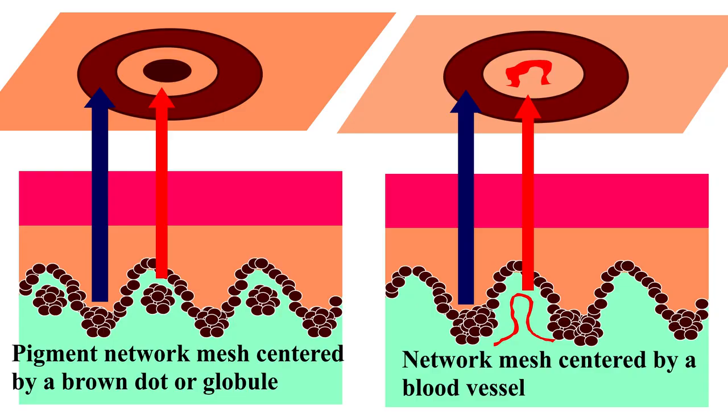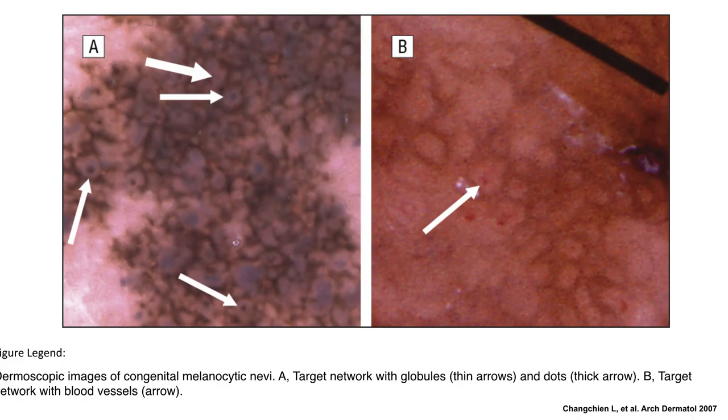Target network is defined as either a brown dot, globule, or dotted vessel that is present in the center of the hypopigmented hole of the network. In another example, as indicated by the arrows, we see network with a brown dot or globule whose presence is right in the center of that hypopigmented hole. Another lesion shows network throughout, with brown dots and globules in the center of the holes of the network. A published example shows target network with brown dots on the left, and target network with dotted vessels on the right.